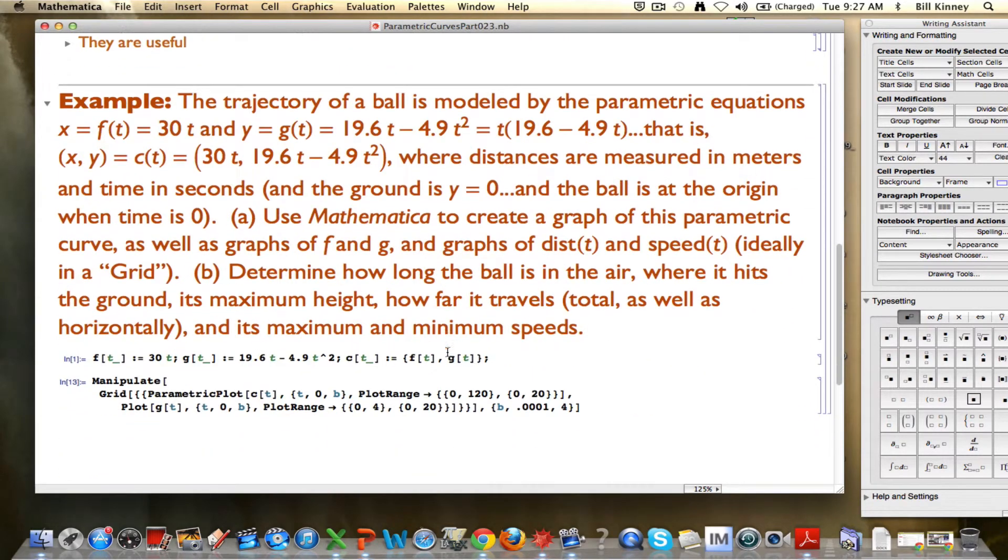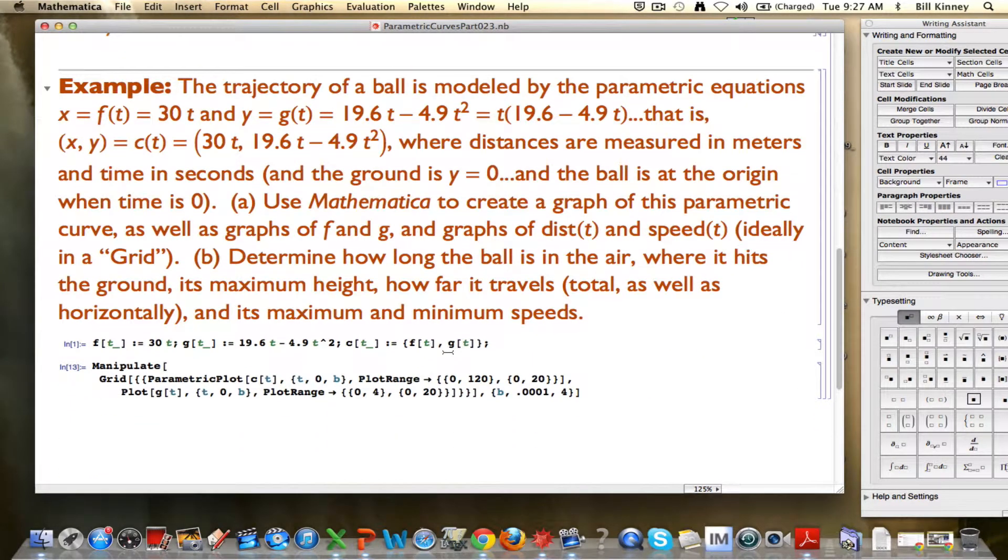Here is the example from the last video, and we're just going to continue building on this. The trajectory of a ball is modeled by some parametric equations. The x-coordinate is a function of time, x = f(t) = 30t. And y, the y-coordinate, is a function of time as well: y = g(t) = 19.6t - 4.9t².